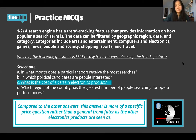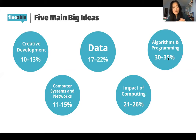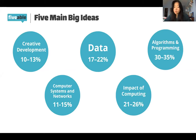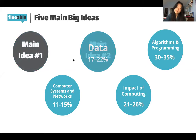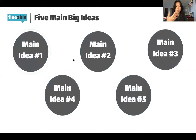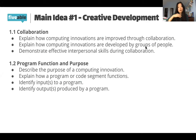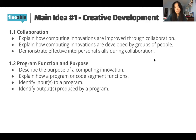There are five big ideas on the AP exam: Creative Development is 10–13% of the test, then Data, Algorithms and Programming, Computer Systems and Networks, and Impact of Computing. Algorithms and Programming is a significant portion. Today we're focusing on Big Idea number one — Creative Development — and these are all the learning objectives: 1.1 Collaboration, 1.2 Program Function and Purpose, and others we'll cover in the slides.